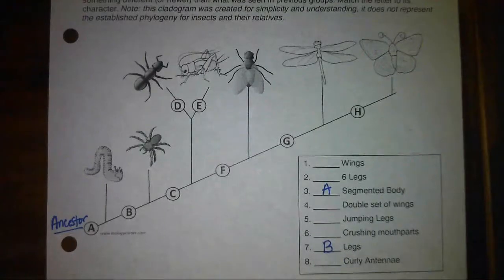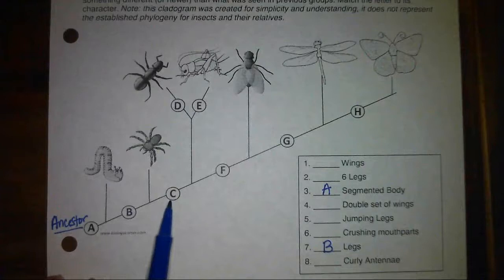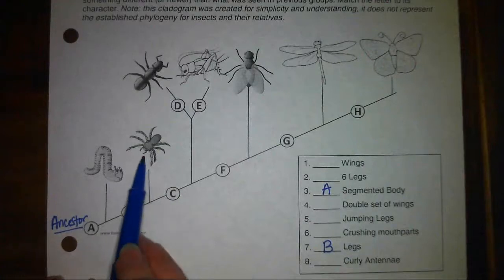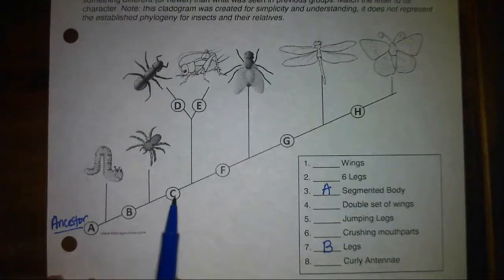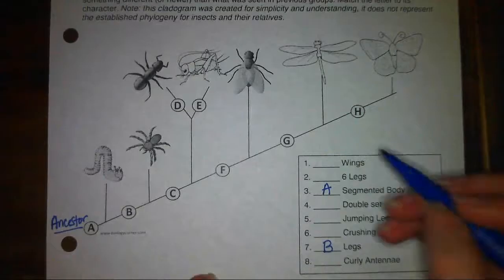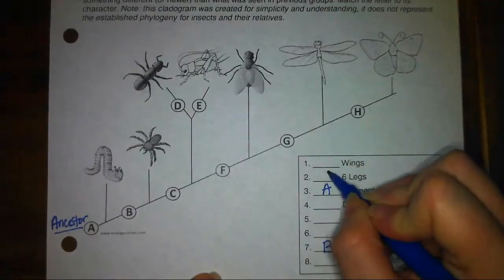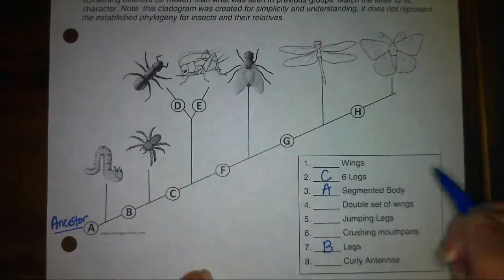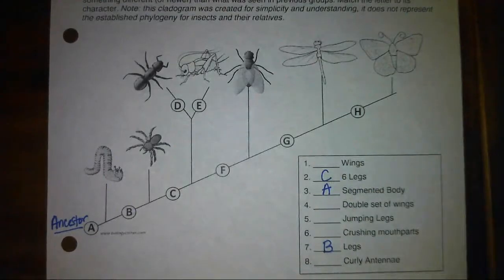Trait C — I need to find something that this organism doesn't have, but all of the rest of the organisms that branch off after trait C do have. What do they all have in common? The fact that they have six legs. The spider beforehand had eight legs.